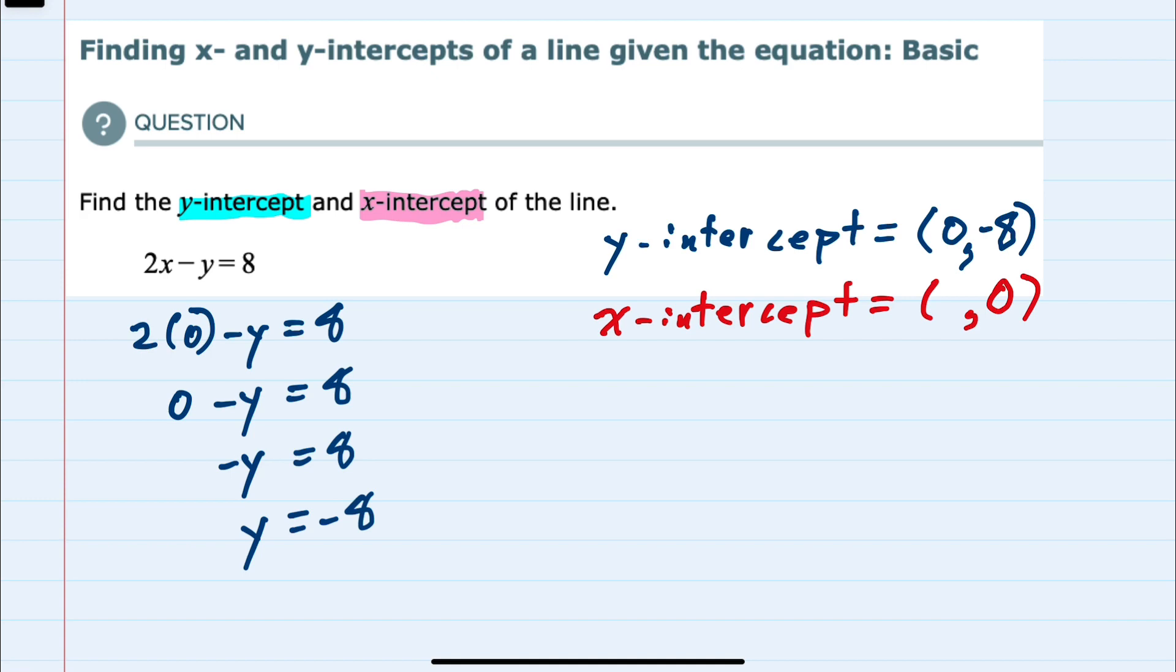So we go back to our equation, this time substituting y with a 0. That gives us 2x minus 0 equals 8, which we can then solve for the x value. 2x minus 0 is 2x equals 8, dividing by 2, x equals 4. So here our x value is 4.